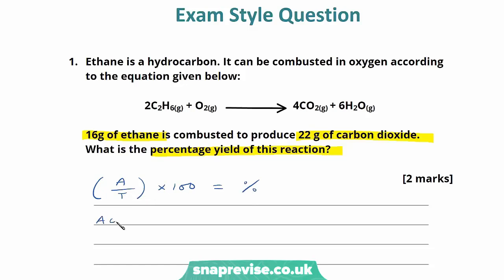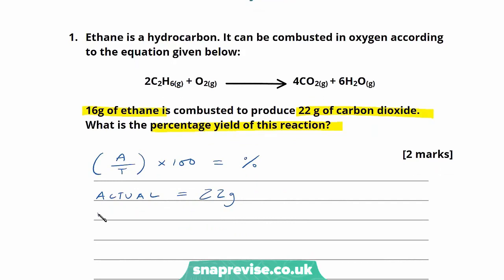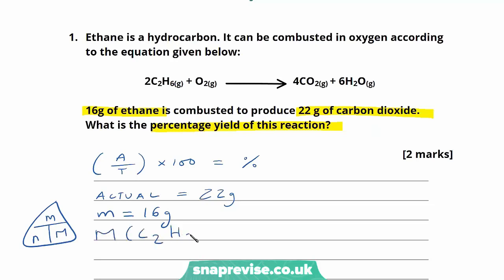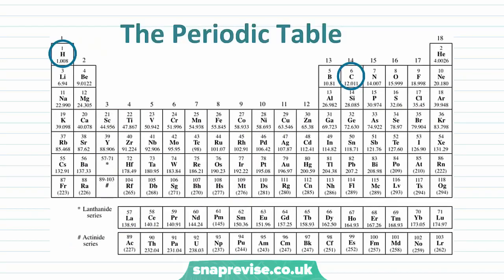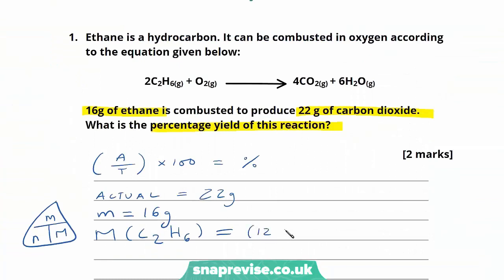We know that the actual yield is 22 grams. Now we can calculate the theoretical yield. We know that we're starting with 16 grams of ethane. In order to investigate the molar ratios involved, we use the equation: number of moles = mass ÷ molar mass. The molar mass of ethane, C₂H₆, is calculated from the periodic table: carbon has a molar mass of 12 and hydrogen, 1. So the molar mass of ethane is (12 × 2) + (1 × 6) = 30.